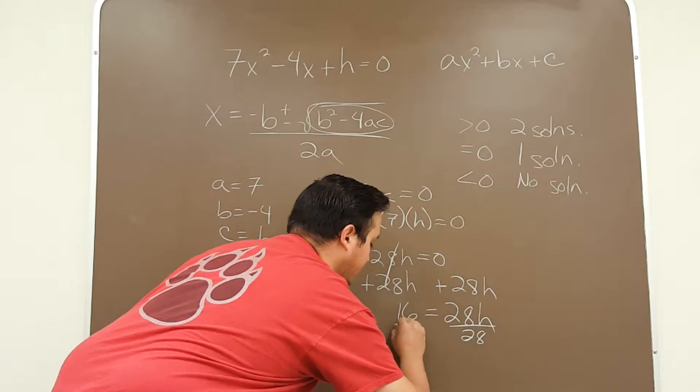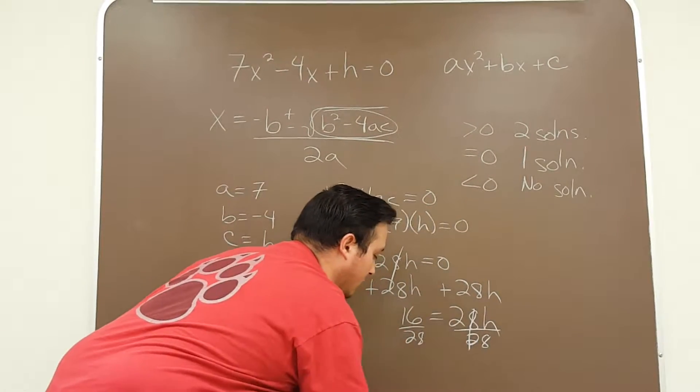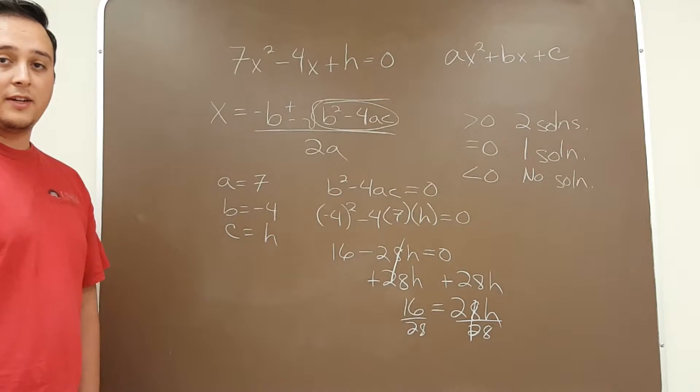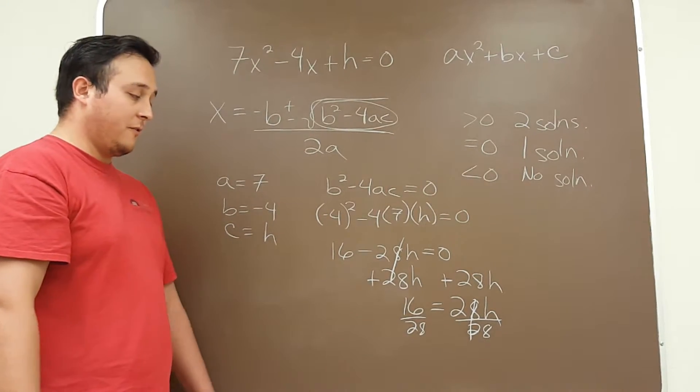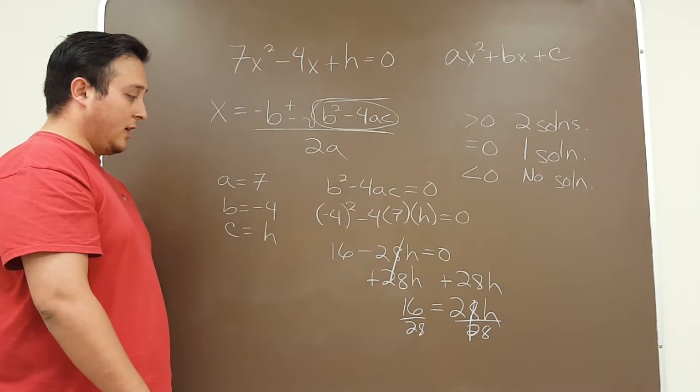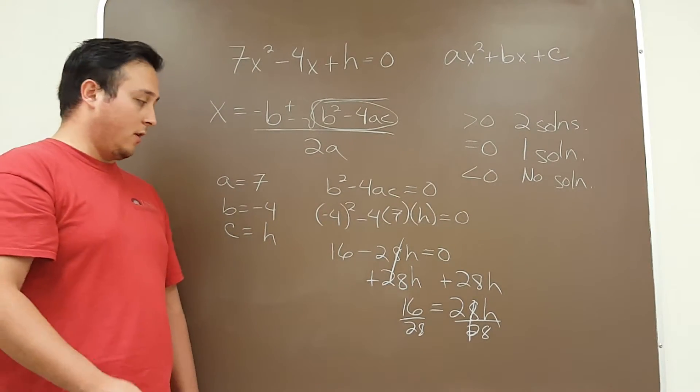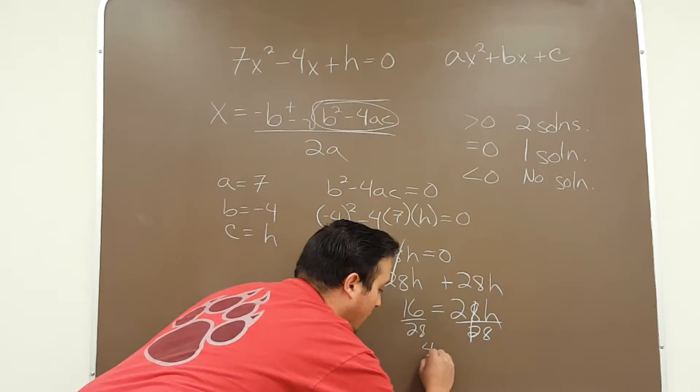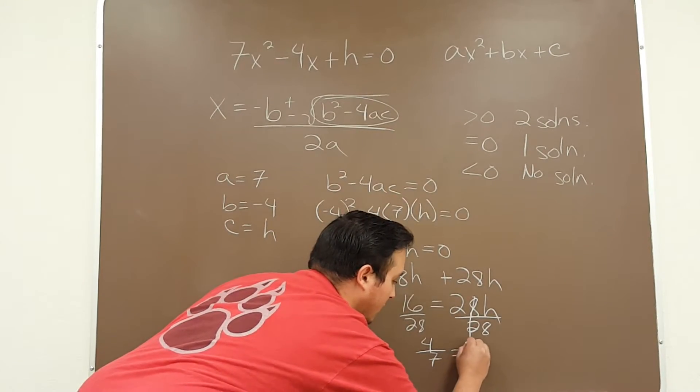Divide both sides by 28. And simplify the fraction on the left hand side. You simplify fractions by figuring out what can I divide both the numerator and denominator by. I can divide both the numerator and denominator by 4, leaving me with 4 over 7 equals h.